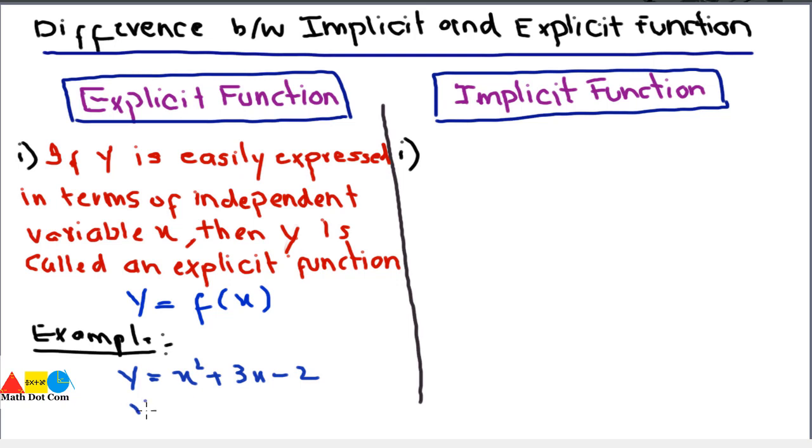One more example is y equals square root of x plus 2. This is also known as an explicit function as x and y are separated from each other. Now how is it different from the implicit function? Let's see by using the definition of the implicit function, then its representation and example.